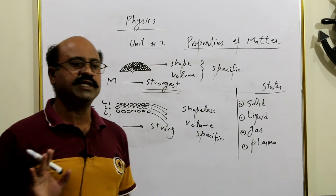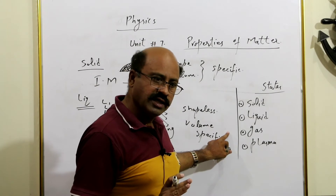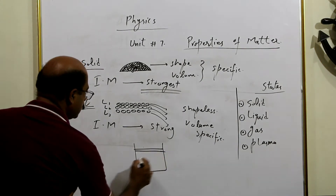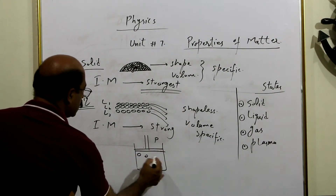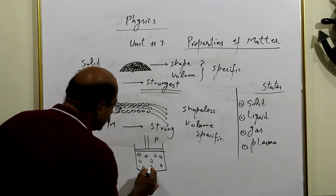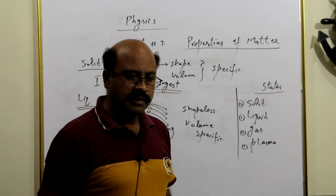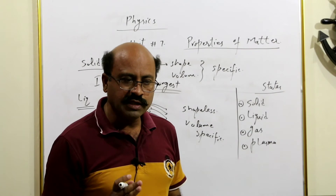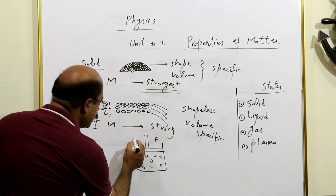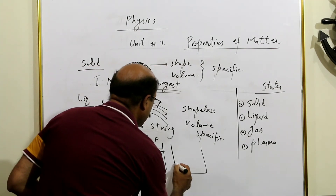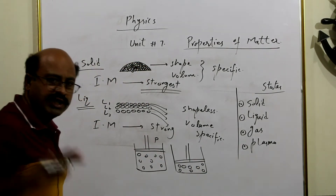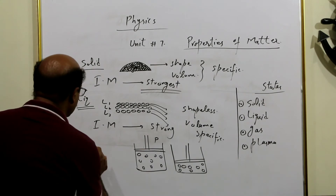Ab hum teesri cheez ki taraf chalenge jo ke hamare paas hai — gas. Mere paas ek cylinder hai, is ke andar maine kisi pressure pe koi bhi gas fill ki hui hai. Ab yeh jo gas hai, is ke jo molecules hain woh bohat ek doosre se fasle pe hain. Agar molecules ke darmiyan fasla bohat zyada hoga toh kya us ki koi shape aur volume banegi? No. Agar main is ko thoda sa daba dun — piston ko thoda sa neeche kar dun — toh yeh gas molecules thode se paas paas aa jaenge. Volume down ho gaya. Ise kehte hain compressibility.